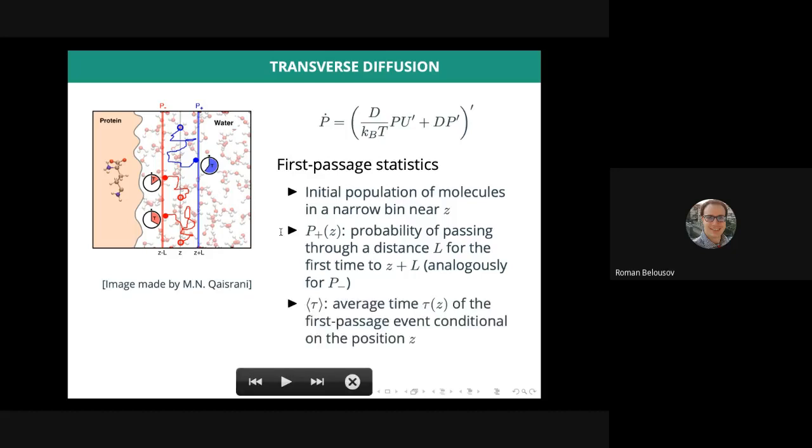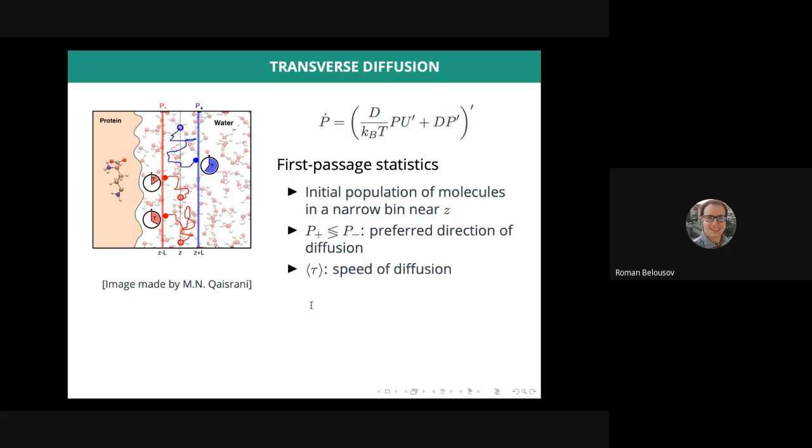In addition, we can measure the time of each first passage event and calculate the mean first passage time, the average of all these observations tau. The probabilities of the positive and negative events characterize the preferred direction of diffusion, whereas the mean first passage time tau characterizes the speed of the diffusion. To describe the spatial variation of the first passage statistics, we apply the same procedure by varying the position of the molecules' initial populations, as we do when constructing histograms of the probability density.